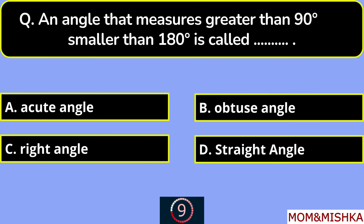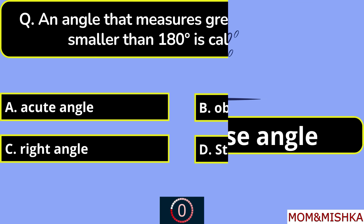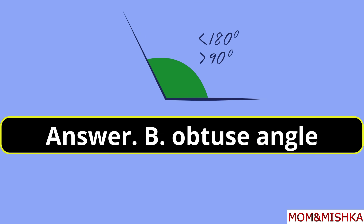An angle that measures greater than 90 degrees but smaller than 180 degrees is called what? It is called an obtuse angle. Option B.